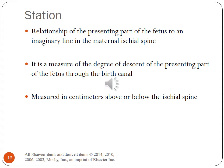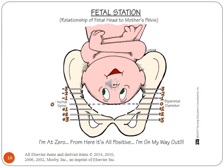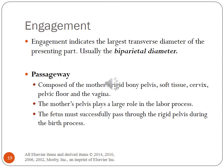Let's discuss station. Station is the relationship of the presenting part of the fetus to an imaginary line at the maternal ischial spines. It is a measure of the degree of descent of the presenting part through the birth canal, measured in centimeters above or below the ischial spines. Engagement indicates the largest transverse diameter of the presenting part — usually the biparietal diameter — has passed through the inlet. Passageway is composed of the mother's rigid bony pelvis, soft tissue, cervix, pelvic floor, and vagina. The mother's pelvis plays a large role in the labor process, and the fetus must successfully pass through the rigid pelvis during birth.